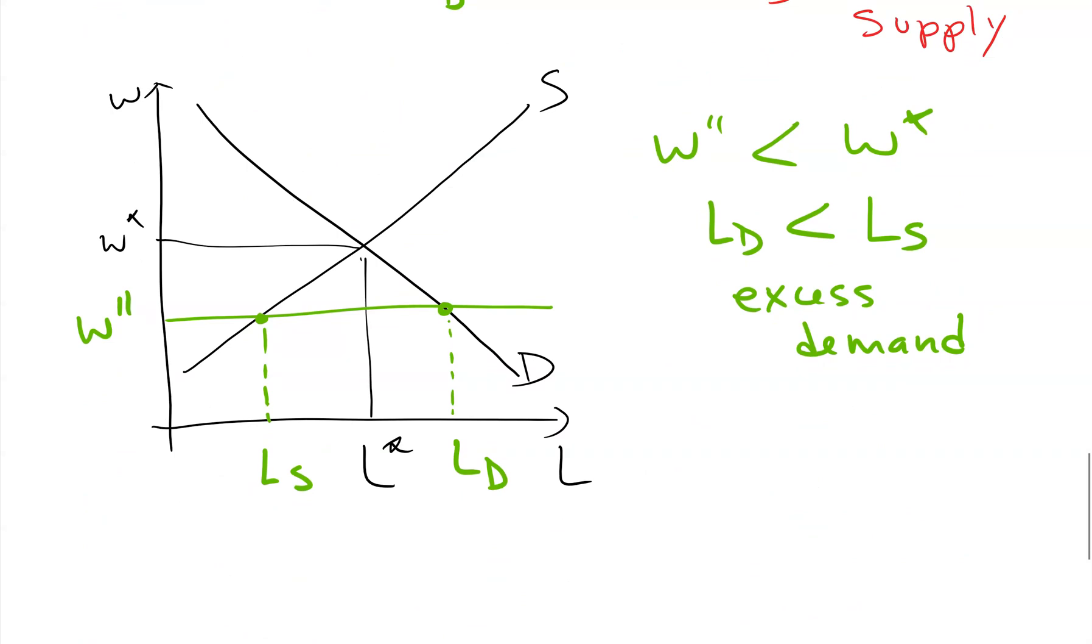There'll be a lot of demand but not enough workers want to work at this wage. If it's a free market then wages would adjust. In this case of the excess demand situation, in a free market we would see wages rise back to W star, because this situation doesn't work when the firms can't find workers and eventually they'll have to raise the wages until they can.